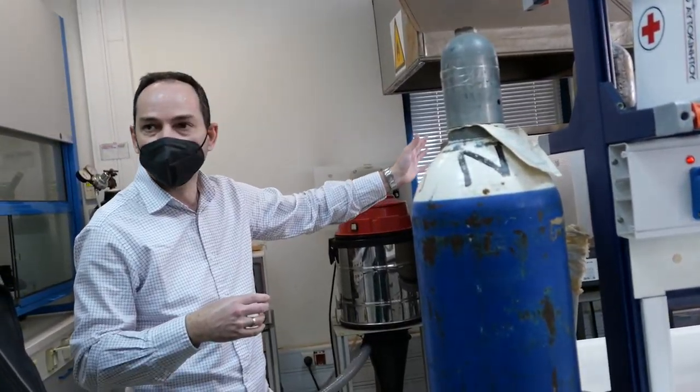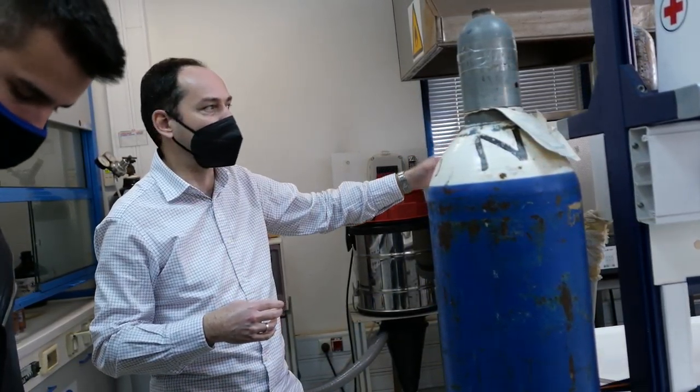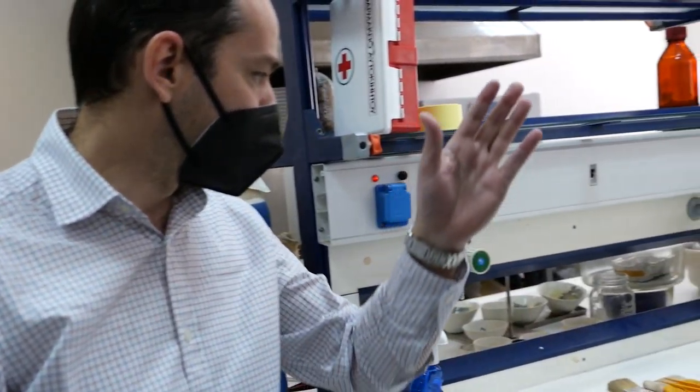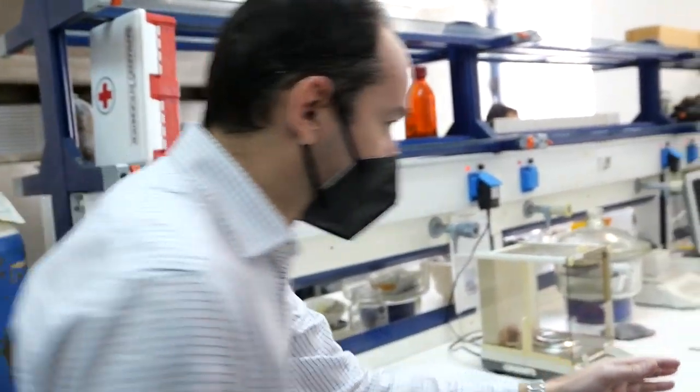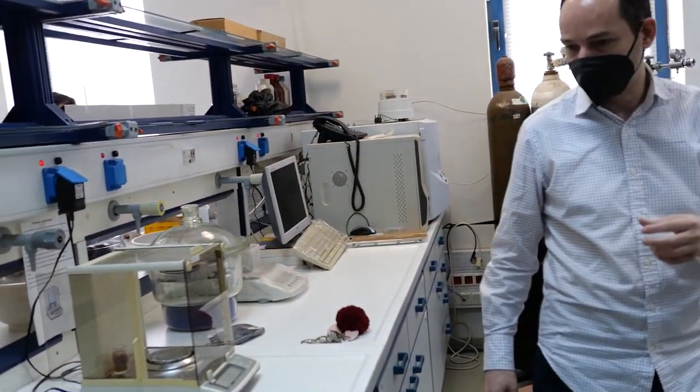We can use a furnace to measure properties like moisture, volatiles and ash. We have other instruments like this one here that measures the calorific value. For example, you can have a waste and then you need to burn the waste in order to use this as a fuel.